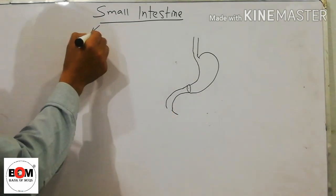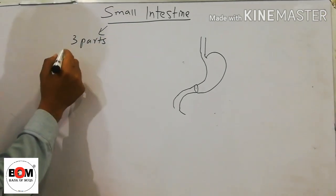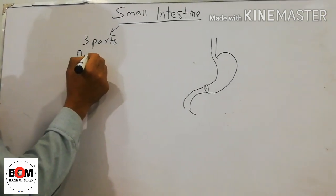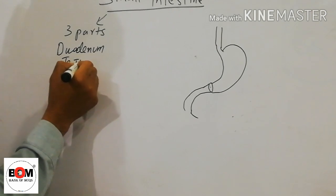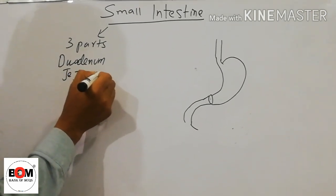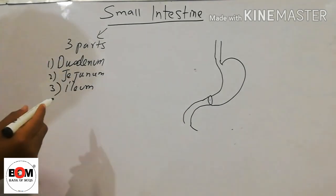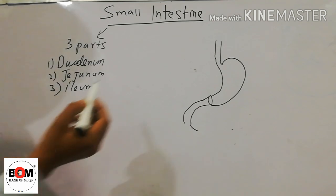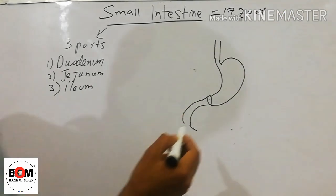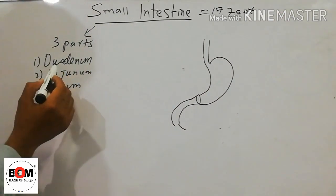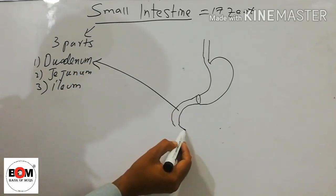The small intestine has three parts: duodenum, jejunum, and ileum. The small intestine is 17 feet long. The first part of the small intestine is the duodenum, which is C-shaped.